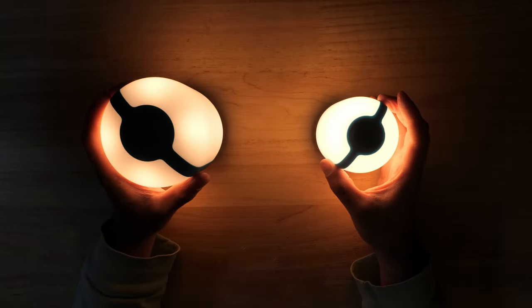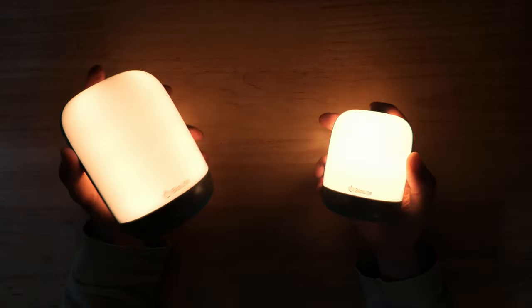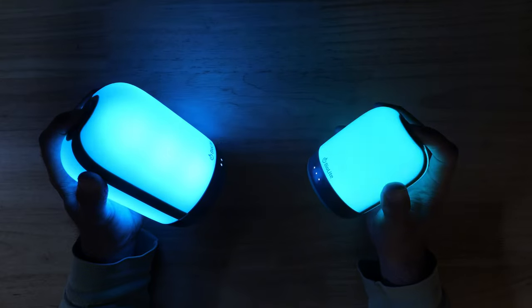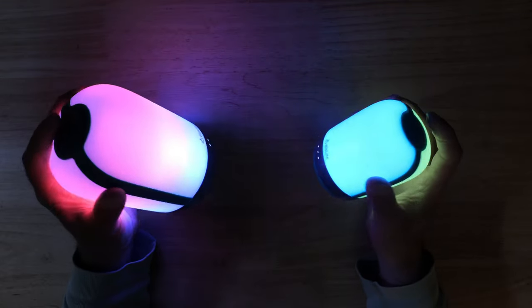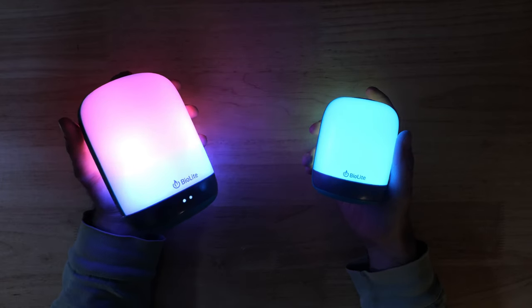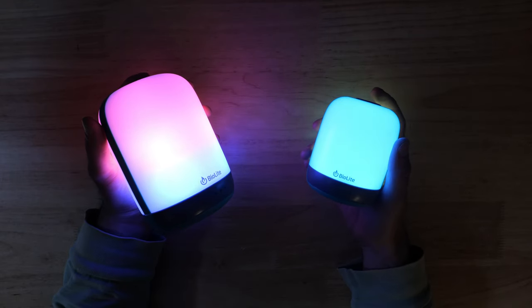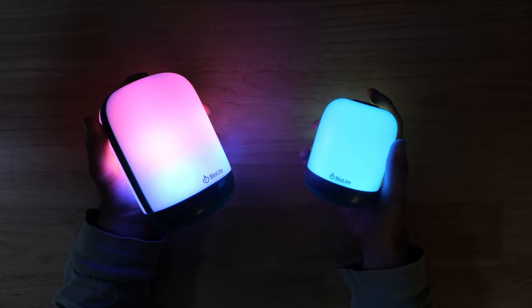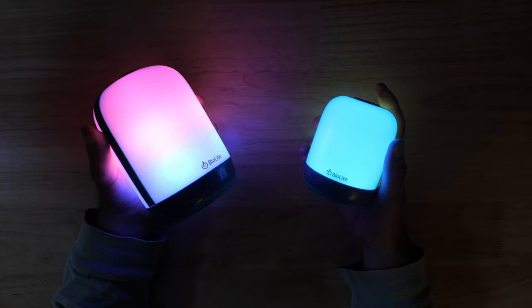There's a warm mode and this is less harsh on your eyes and better to read with. A single color mode which is fully adjustable and allows you to ramp through different colors and finally a multi-color adjustable mode which shows multiple colors simultaneously and is adjustable on the Alpen Glow 500 or you can select up to two colors on the 250.